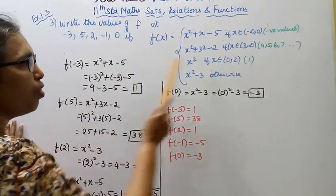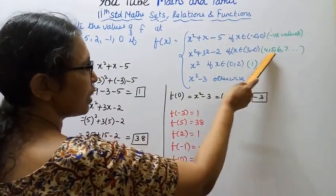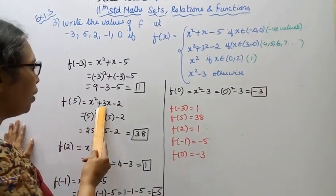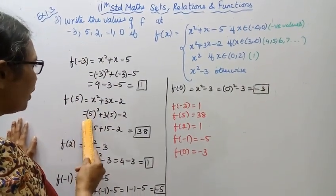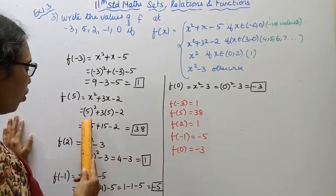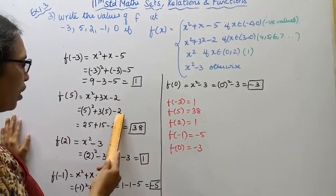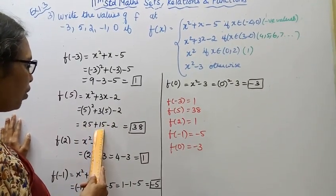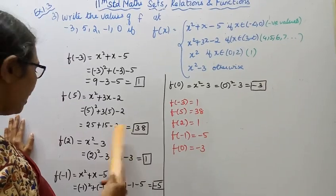f of 5: 5 is a high value, so we use x squared plus 3x minus 2. Substituting x equals 5: 5 squared plus 3 into 5 minus 2 equals 25 plus 15 minus 2 equals 40 minus 2 equals 38.